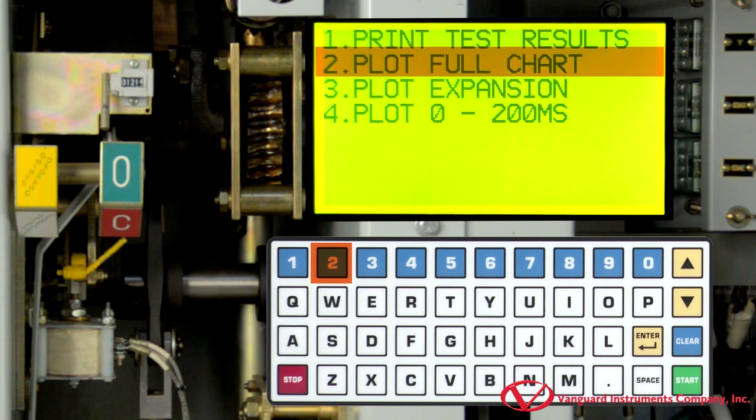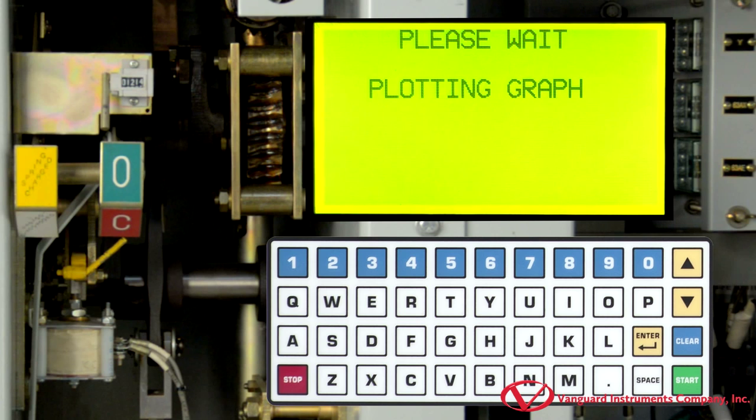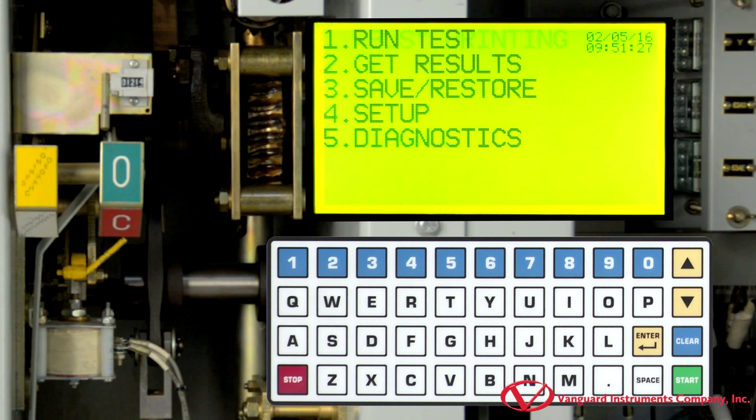We are going to select Plot Full Chart by pressing the 2 key. For the dynamic resistance plot, we are going to select 0 to 2000 micro-ohms by pressing the 2 key. The test results are now going to be printed on the unit's thermal printer. Once printing is completed, you will be returned to the main menu.